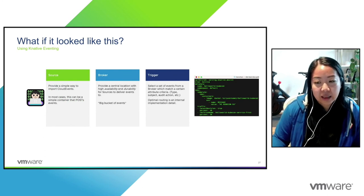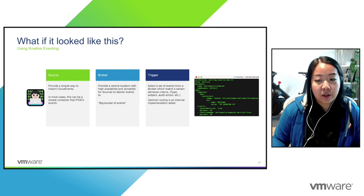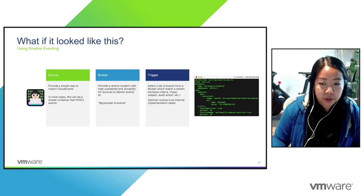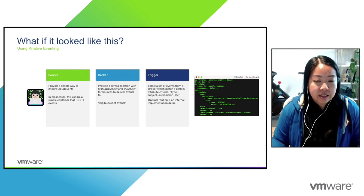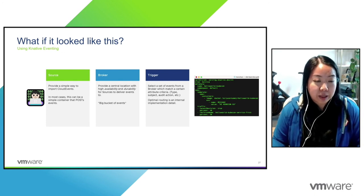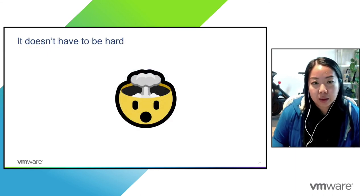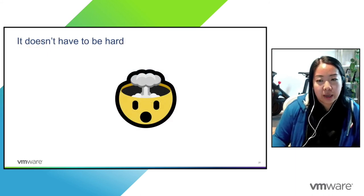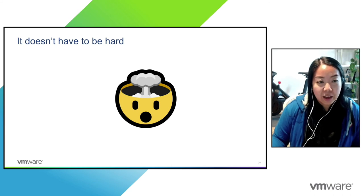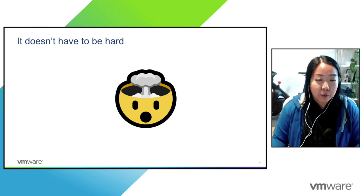With Knative Eventing, it allows you to move towards an event-driven architecture and decouple event delivery from your application code. By using Knative Eventing's source, broker, and trigger, and standardizing on cloud events, you simplify that process. The point I really want to get across is that it really doesn't have to be that hard — you don't need to have this exploding brain feeling modifying YAML, learning all of these concepts, code reviewing YAML, when it could be this. Focus on what matters to you.